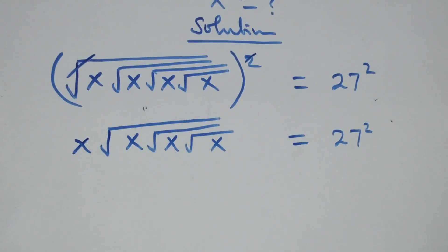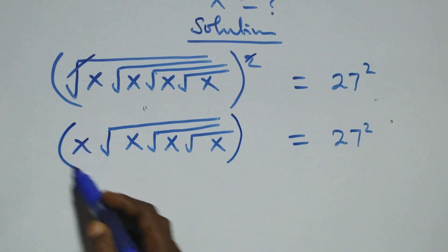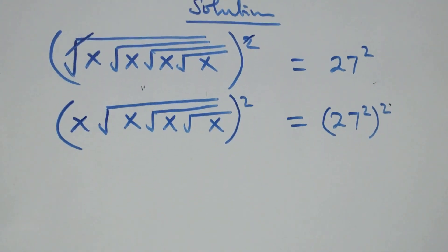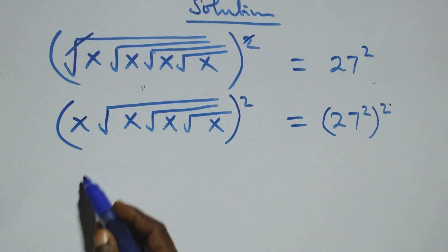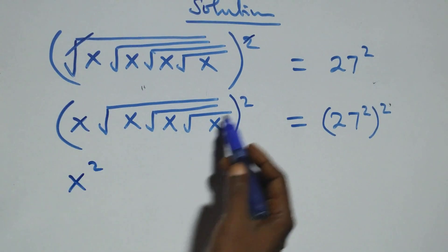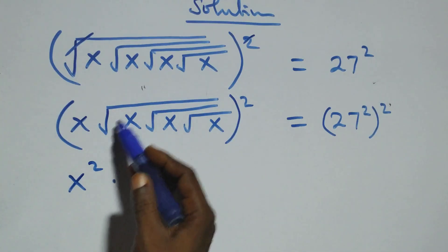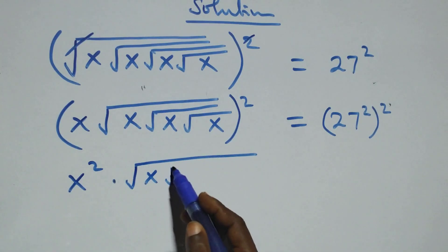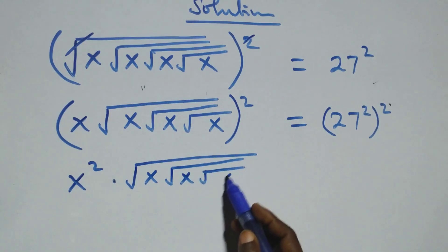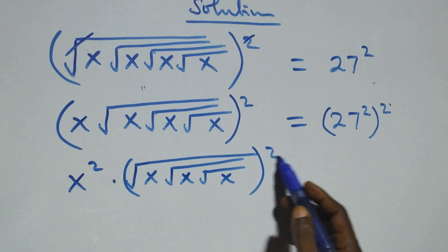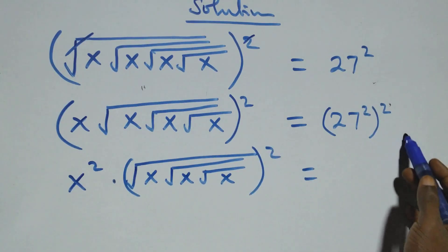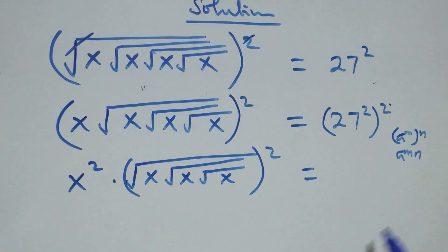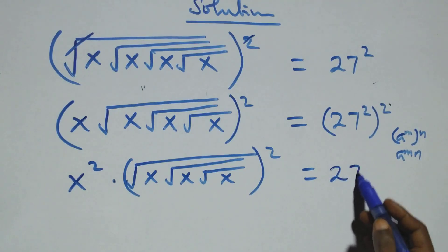Next step, we square both sides again — squaring this side and also squaring this side. The power of 2 affects x and this becomes x squared, times square root of x squared. On the right side, using the rule that a raised to power m, raised to power n equals a raised to power m times n, this becomes 27 raised to power 4.